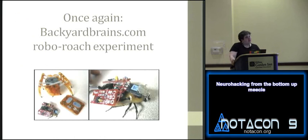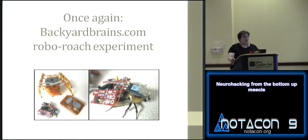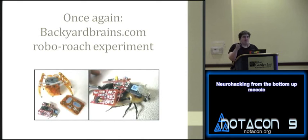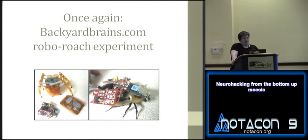Backyard Brains has a project called the RoboRoach: a live cockroach with electrodes attached to its antennae and hardware glued to its back. The only truly invasive part is the antenna electrodes. The idea is to steer the cockroach by electrically stimulating the antennae — simulating the sensation of running into an obstacle — to direct it left or right. The interesting thing is it doesn't work for long: the cockroach adapts very quickly to the electrical stimulation and soon learns to ignore it, suggesting there's a lot more going on in its nervous system than simple reflex behavior.